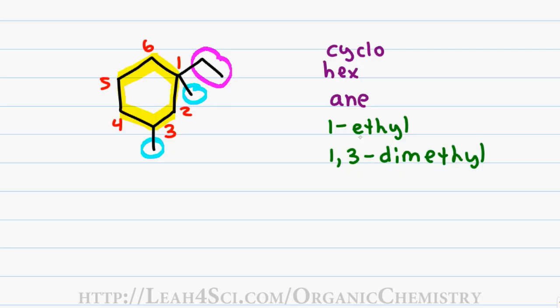Putting these in alphabetical order, I compare E to M. Remember, di just represents two methyls but is not taken into account when checking for alphabetical order. Since E comes before M, I get a final name of 1-ethyl-1,3-dimethyl-cyclohexane.